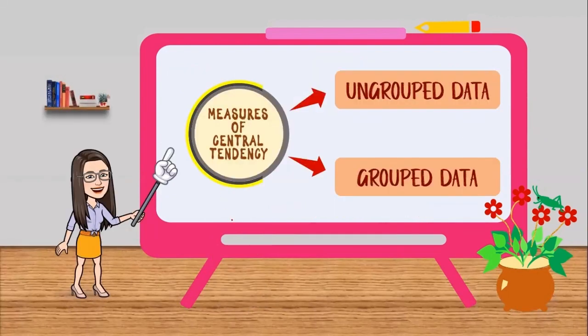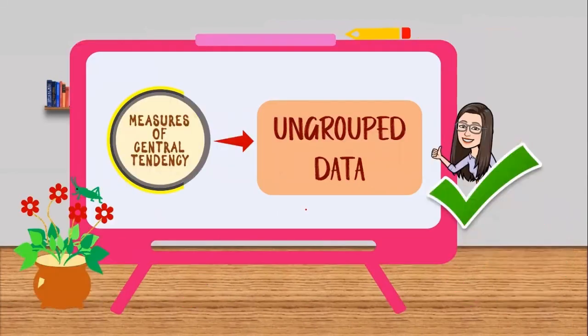Measures of central tendency can be solved using ungrouped data or group data. Ungrouped data when there are less than 30 and group data when the set of data is equal to 30 or more. In this lesson, we will talk about ungrouped data.